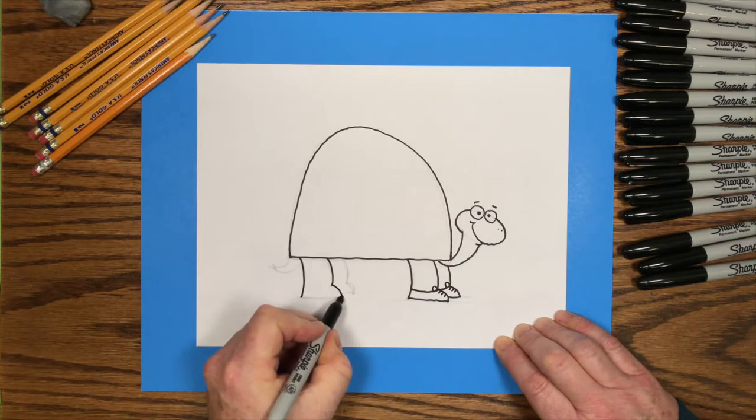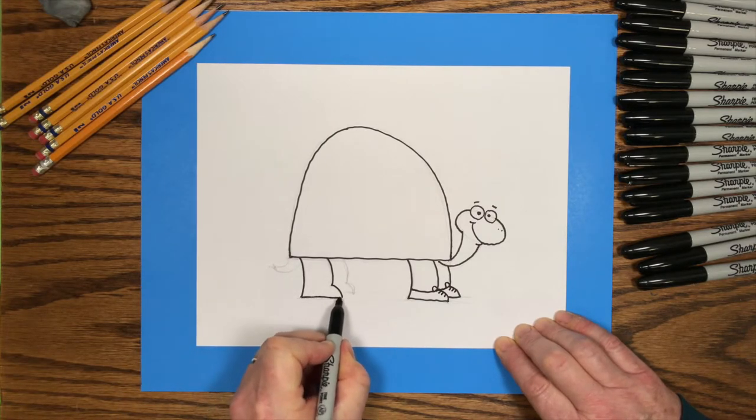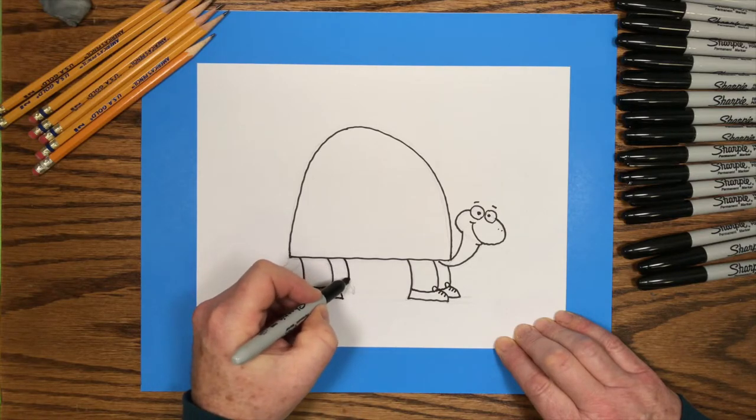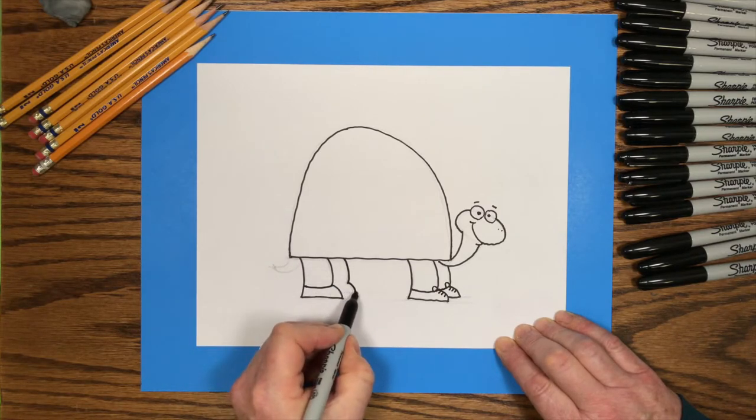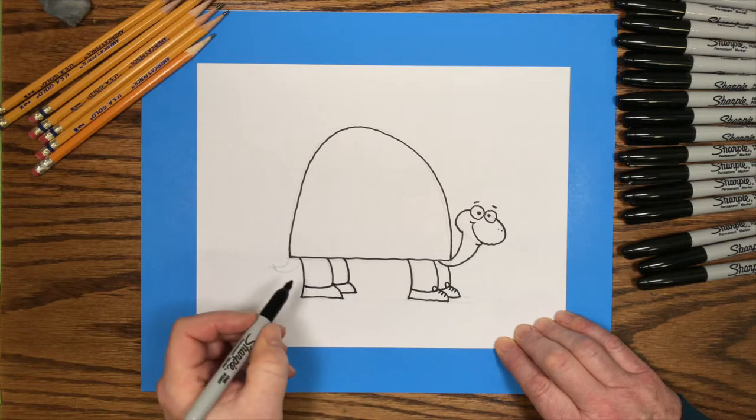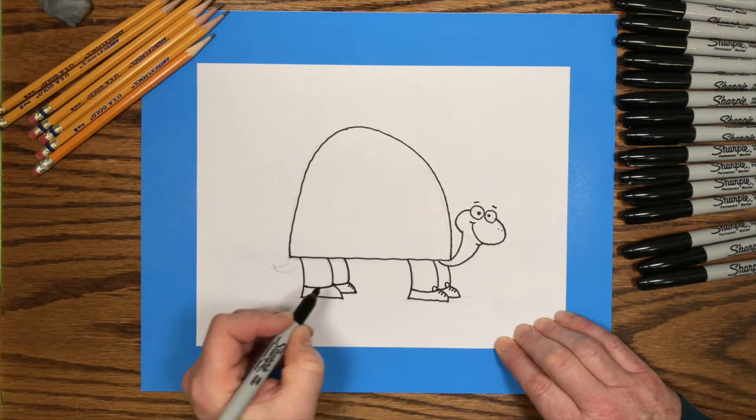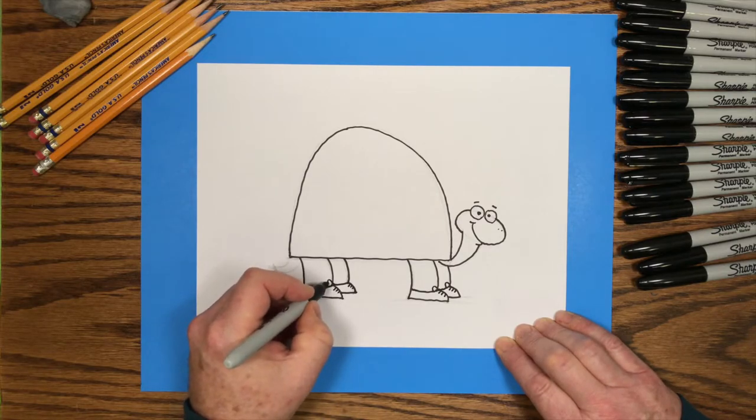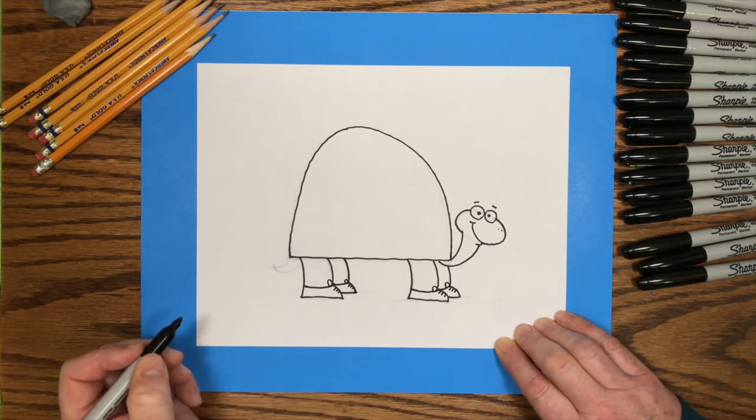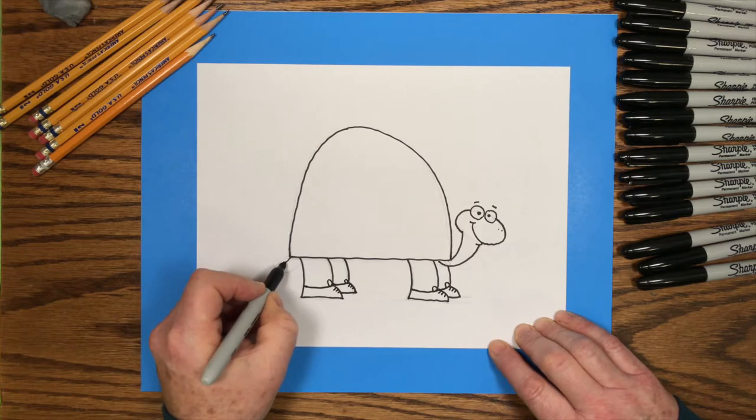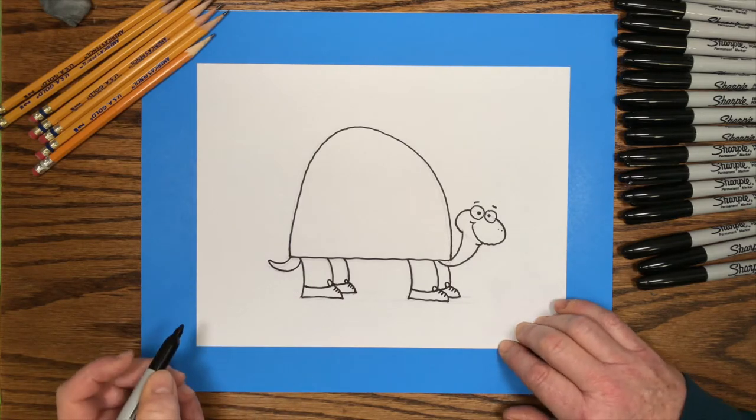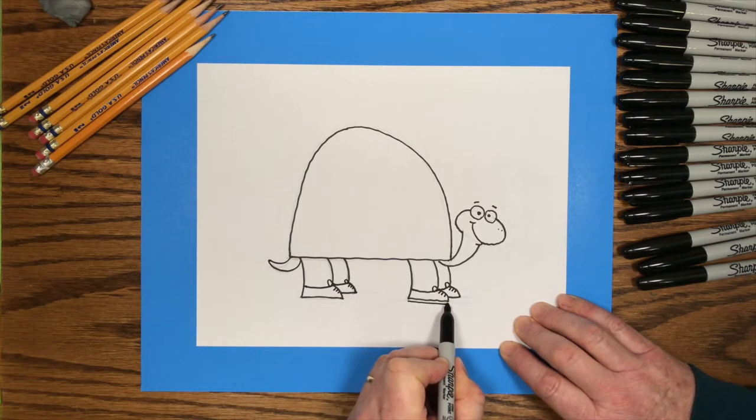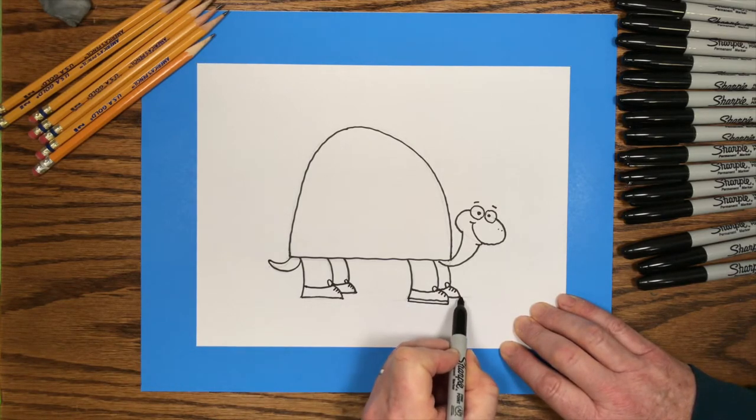Let's do the same thing to the back legs. And then I'll trace the little curved tail. I'll add a little line beneath each shoe, which will be the sole of the shoe.